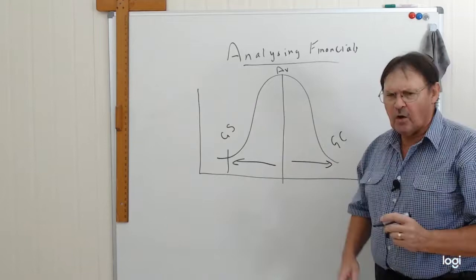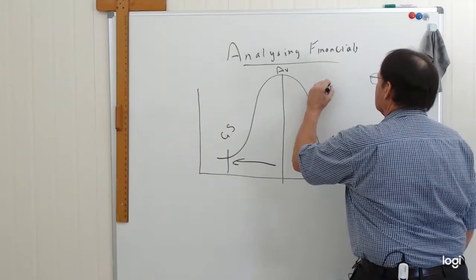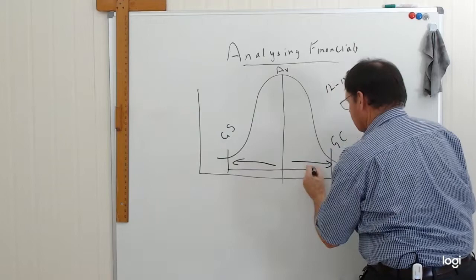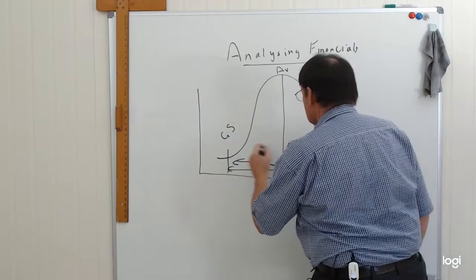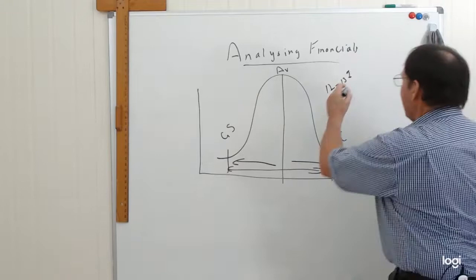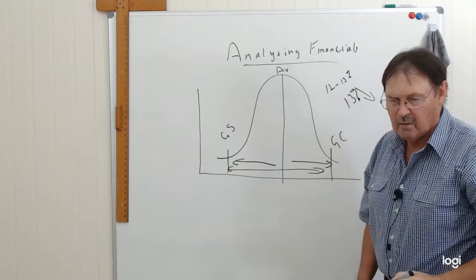Now we know from data provided by the ATO and various other sources that there's about a 12 to 13% difference between here and here. If you're a business at the really bad end of the scale, effectively your competitors are buying their material cost or their labor at about 13% less than you are. And that directly relates to profit.